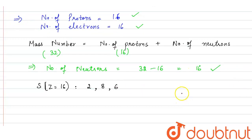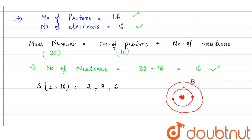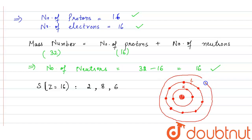If we draw the diagram, at the center we have the nucleus. Then in the first shell, which is the K shell, there will be 2 electrons denoted by dots. Then in the second shell, which is the L shell, there will be 8 electrons. Then in the third shell, which is the M shell, there will be 6 electrons.